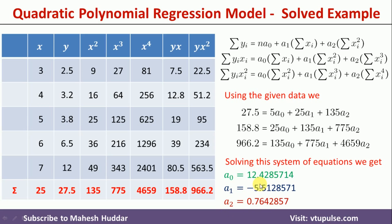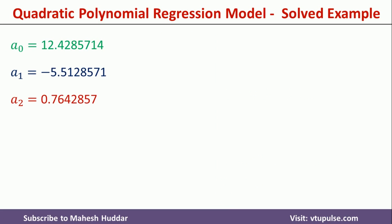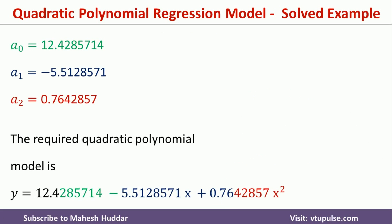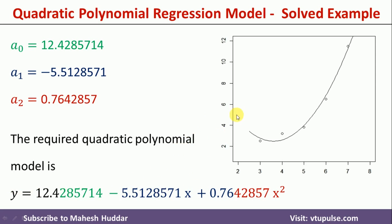We put these values into the base quadratic polynomial regression equation, so we can predict the dependent variable using the independent variable. The final quadratic polynomial model is: y = 12.4 minus 5.51 times x plus 0.76 times x squared. If you know the value of x, substitute it into this equation and you can calculate y. If you vary x from 0 to n, you will generate the polynomial curve.